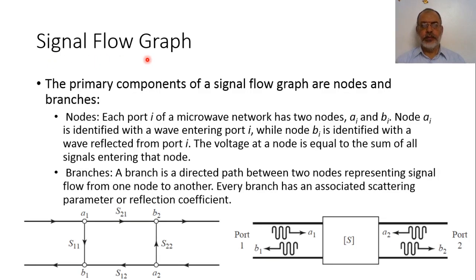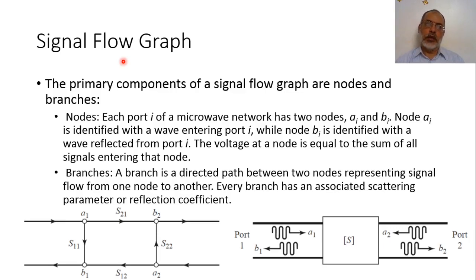Signal flow graph is another technique that can be used to obtain the performance of multiple networks connected to each other. In the previous video we discussed the case of cascaded networks solved using the transmission matrix (ABCD matrix). Now we are going to present another technique using a signal flow graph, which is based on the scattering parameters directly to study connected networks.